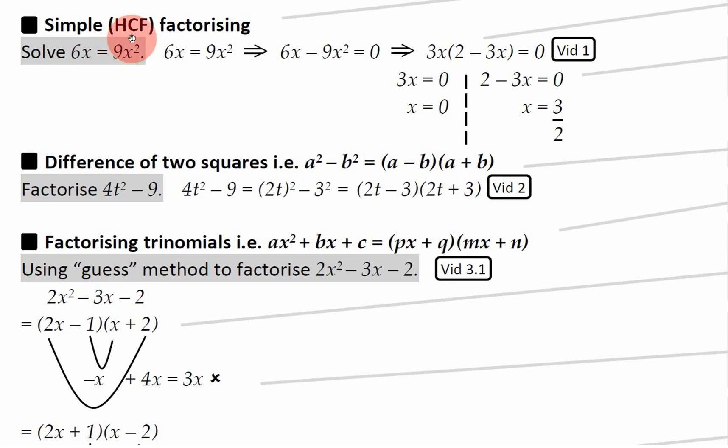So let me show you how to use highest common factor factorizing to solve basic quadratic equations like this one, 6x equals 9x squared.